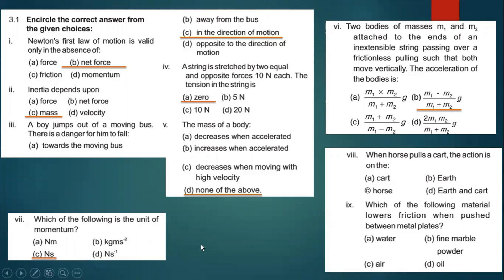Part eight: when a horse pulls a cart, the action is on — the right option is the earth and cart. When the horse pulls the cart and the cart moves, the action and reaction forces involve the horse, cart, and earth. We have discussed this in the chapter.